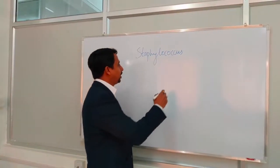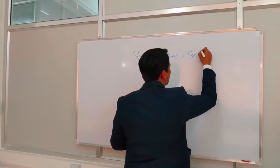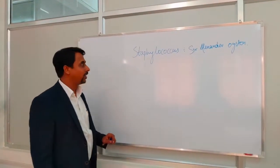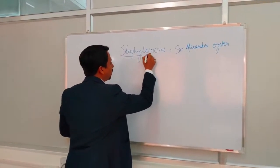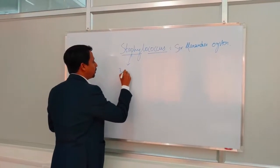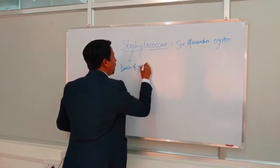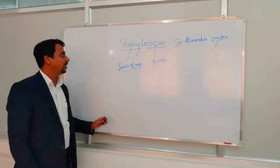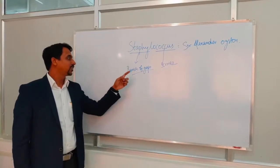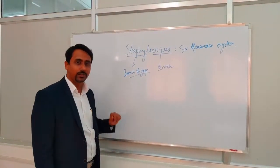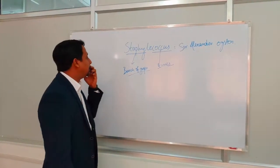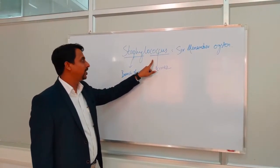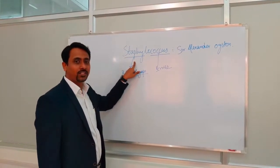The word Staphylococcus was actually given by Sir Alexander Ogston. This word is comprised of two different Greek words: 'staphyle,' meaning bunch of grapes, which describes the arrangement or appearance of the bacteria, and 'coccus,' meaning berries, which describes the shape. So by the name itself you understand it is a round-shaped bacterium with a cluster arrangement.